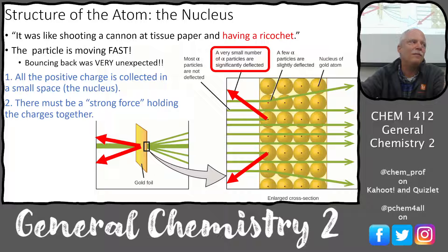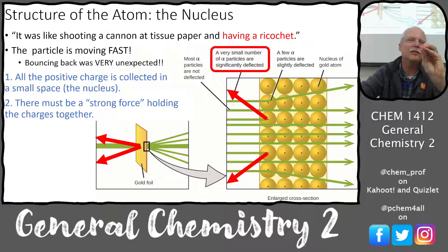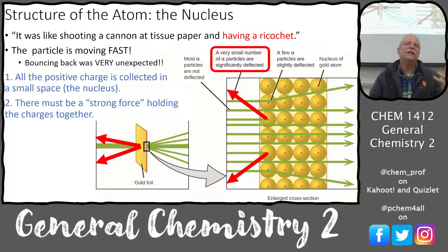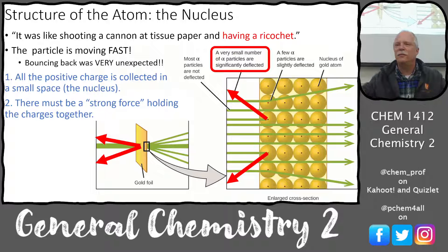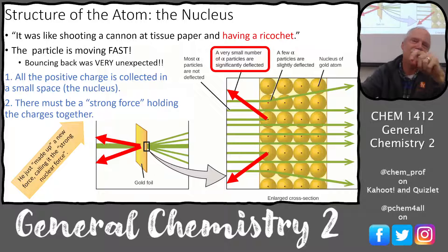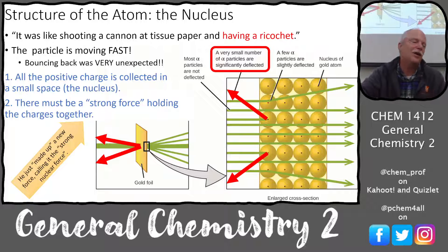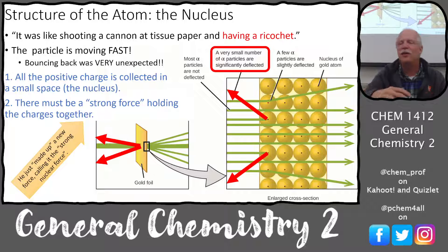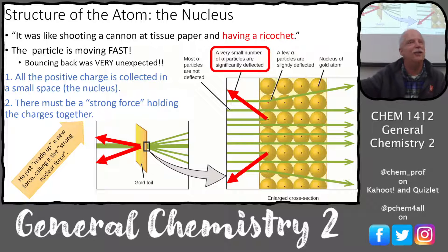The only explanation was that all the positive charge must be concentrated in a very small space — the nucleus. Most particles went through without hitting anything, but a few hit the nucleus and bounced back because both were positively charged. But how do you pack positive charges into a small space? Rutherford proposed there must be a strong force holding them together — the strong nuclear force — which is way stronger than Coulombic, gravitational, or magnetic forces.